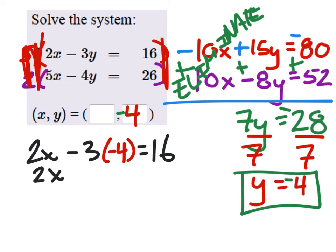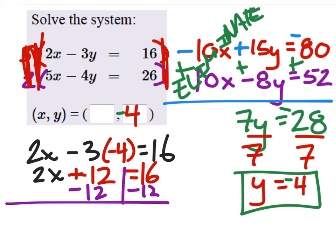So 2X, that would now be a positive 12 equals 16. Subtracting 12 from both sides, and we get 2X equals 4. And divide by 2 gives us X is 2.